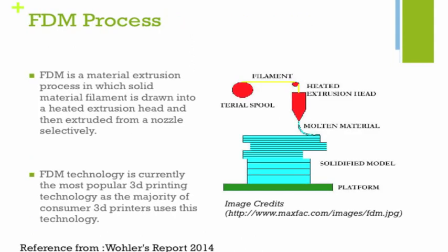The FDM process is a material extrusion process. The material starts on a spool as a solid filament, which is drawn into a heated extrusion head where it gets melted into molten material. The nozzle then selectively moves to fill the cross-section of the part, building layer by layer as shown in the diagram. FDM is one of the most popular 3D printing technologies — it is simple, cheap, and used by the majority of consumer 3D printers. Stratasys is currently the world leading company in this technology.